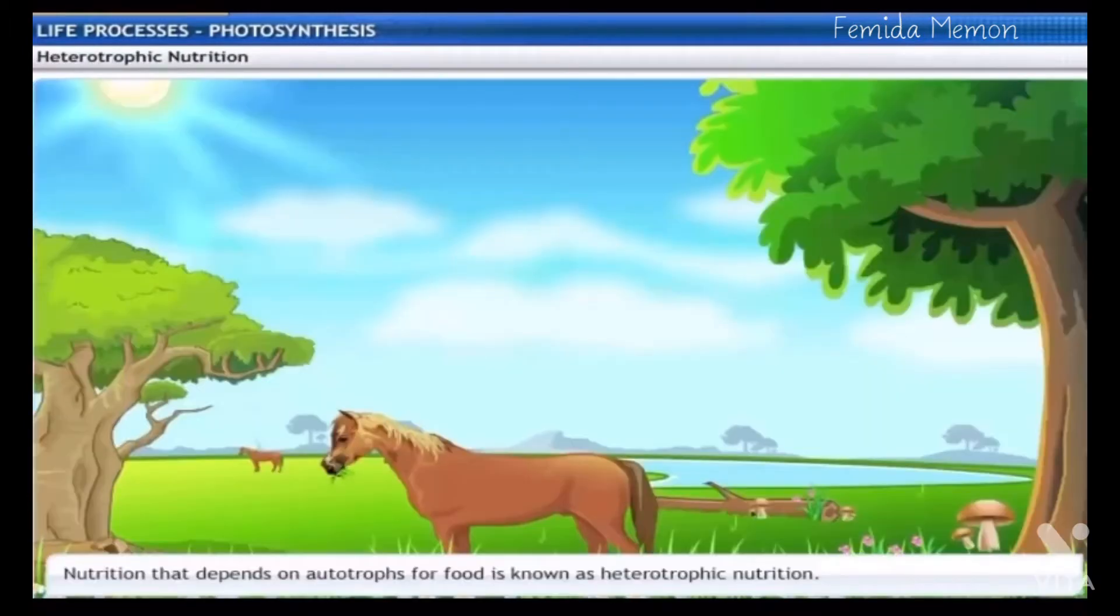Fungi and animals cannot prepare their own food and directly or indirectly depend on autotrophs for their food. Such organisms are called heterotrophs, and the process of nutrition in heterotrophs is called heterotrophic nutrition.